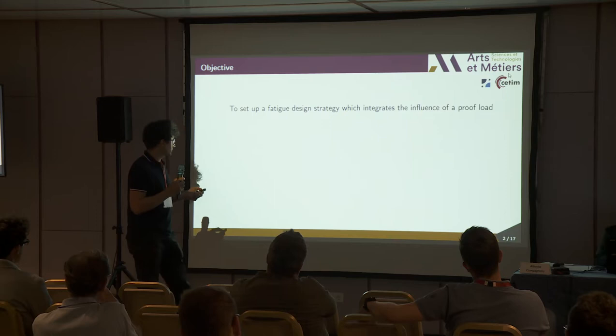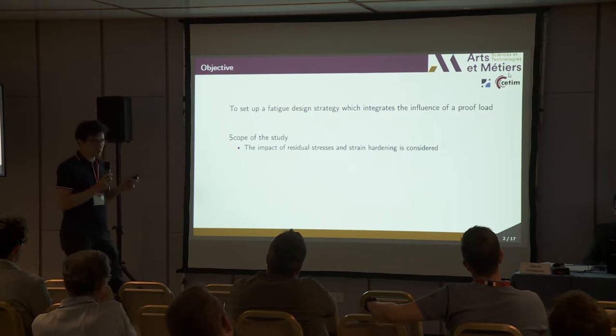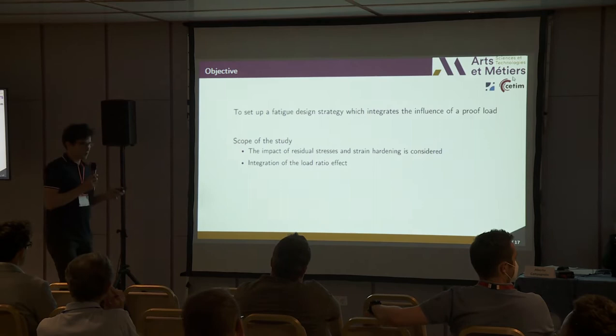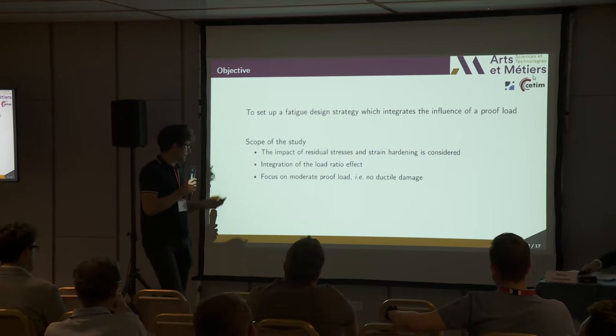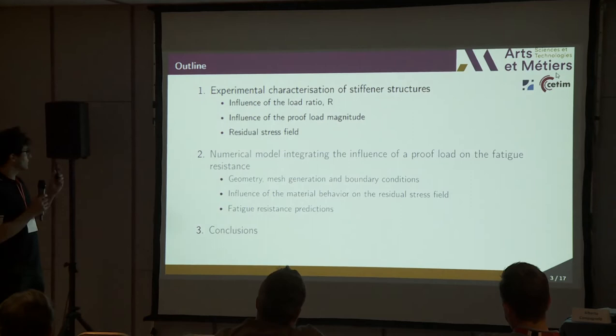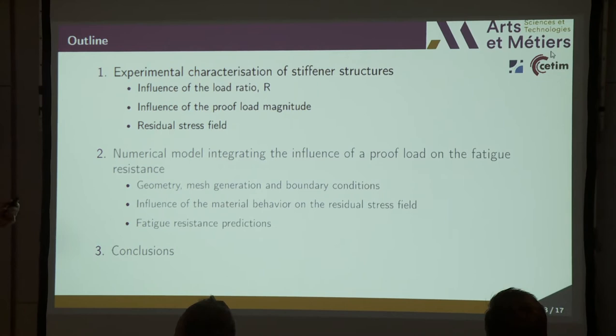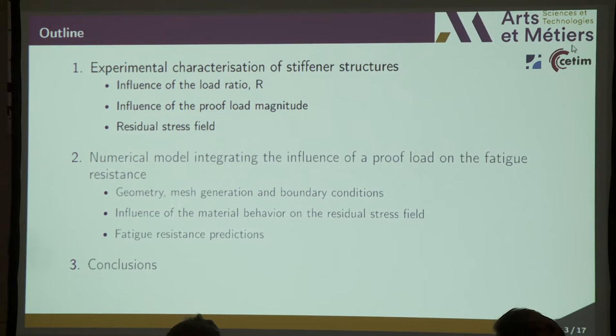The scope of this study considers the impact of residual stresses, strain hardening effects, and the influence of the load ratio effect, focusing only on moderate proof load — that means no ductile damage. I will present this work in three parts: first, the main experimental results, mainly the influence of the stress ratio, the proof load magnitude, and the consequences on the residual stress field. Then the numerical model, and finally some conclusions.